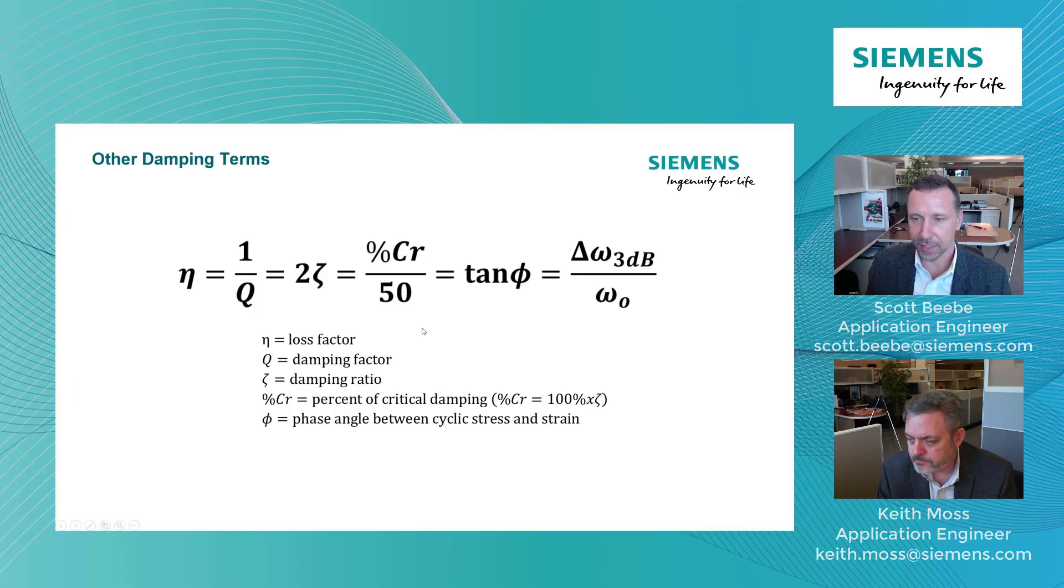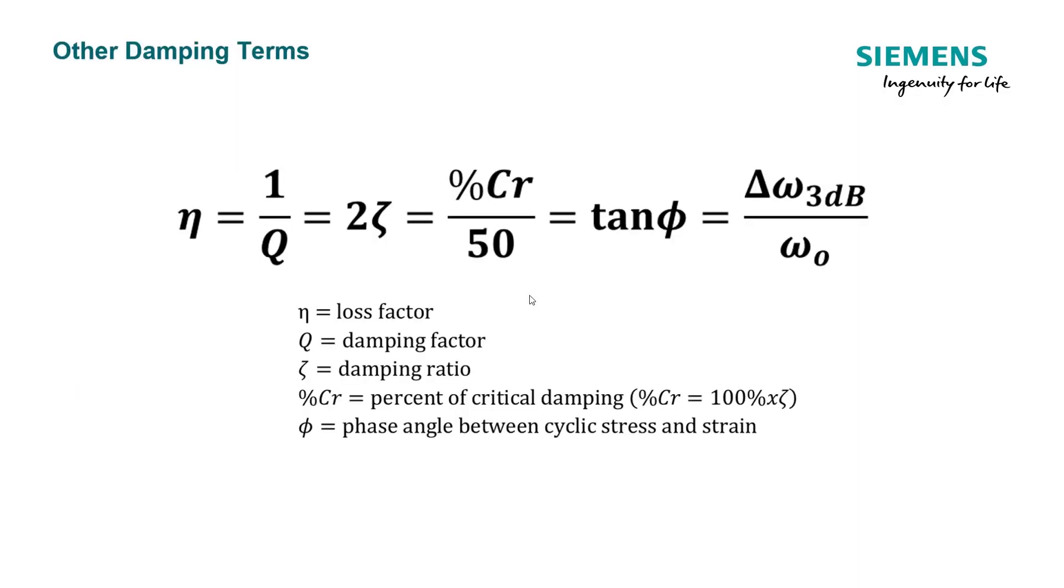So going back to the presentation to see how these damping values are related, you can see that the loss factor is related to the Q factor or damping factor, and the damping ratio is also related. So these equations are all related. It's just different ways of describing the damping value or the damping percentage, let's say, of a given resonant frequency within my structure.